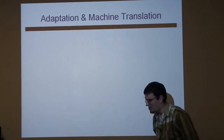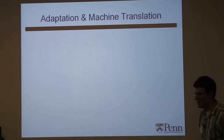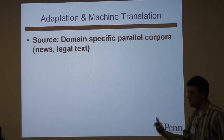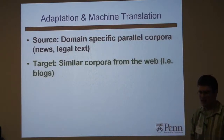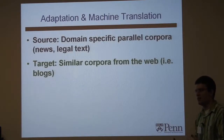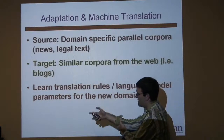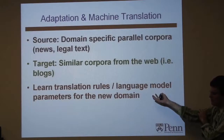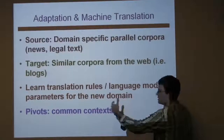I want to end on a speculative note. First is machine translation. The scenario I'm envisioning is where you have domain-specific parallel text — news, legal text, UN transcripts — but you want to do translation in a very different domain, like blogs. You may have lots of similar corpora: people write blogs in Chinese and English, but they don't often translate them. You can obviously adapt a language model, but you could also conceive of learning new translation rules based on similar contexts to the source data you have.